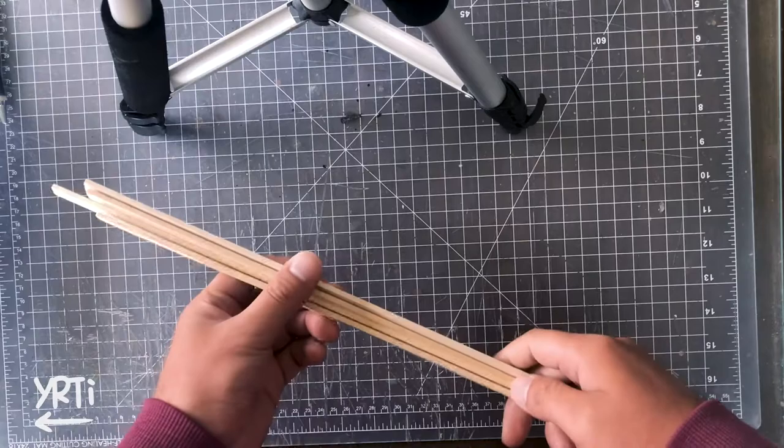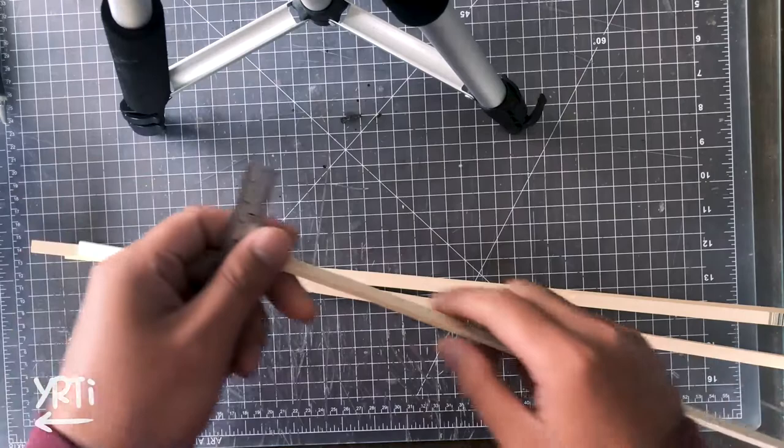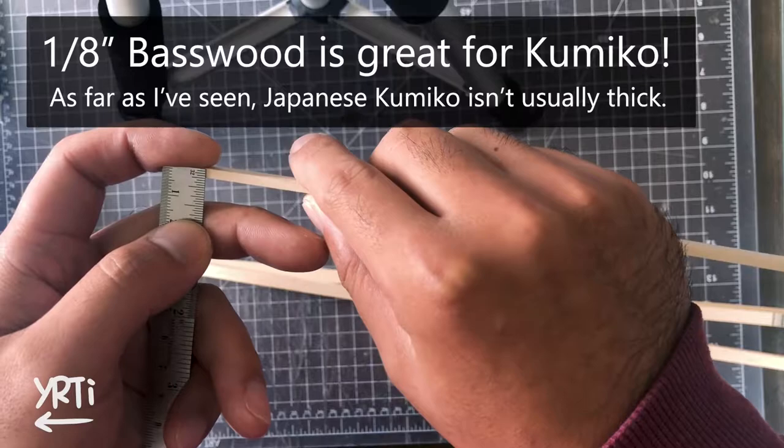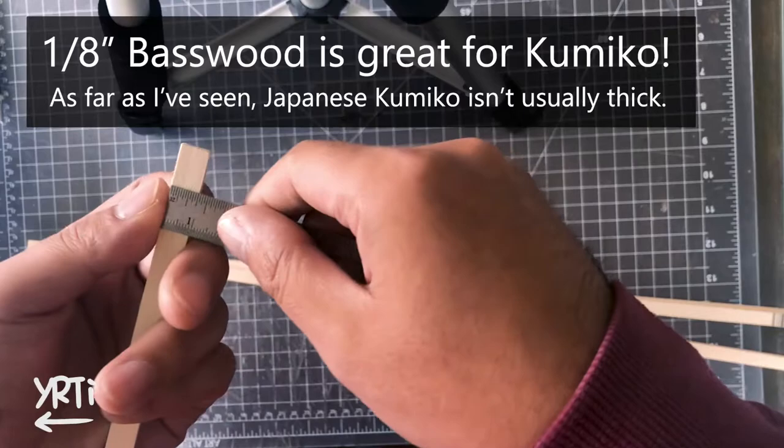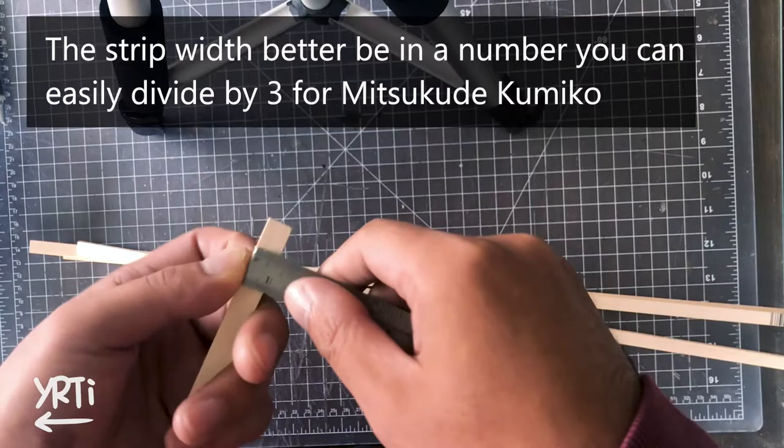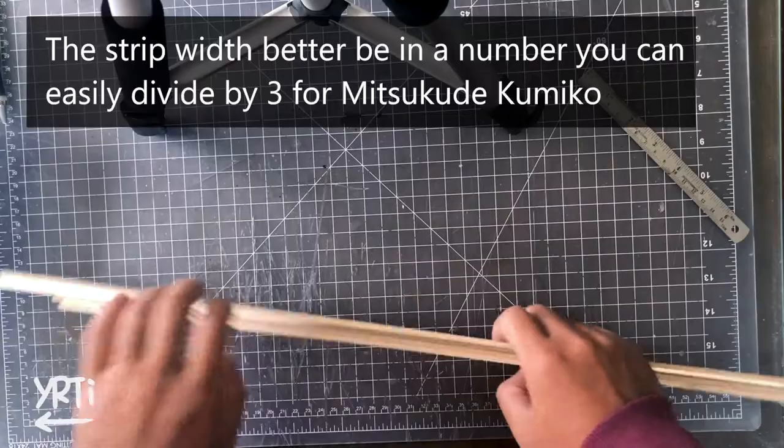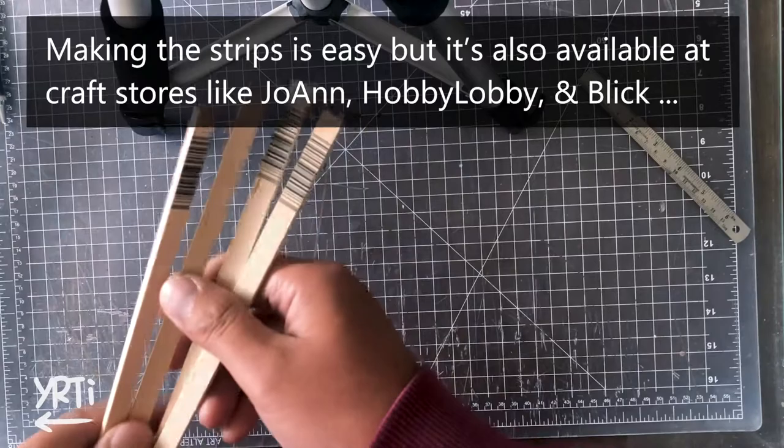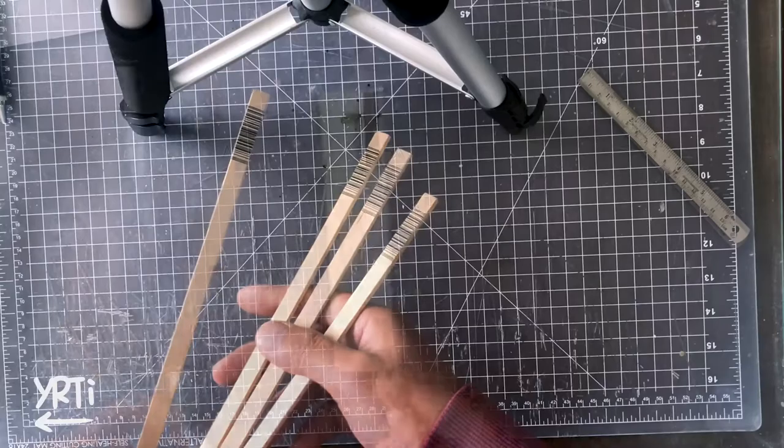Let me start my Mitsukude Kumiko tutorial. First, let me highlight the wood choice. I recommend you try bass wood or any soft wood for the first time and the thickness can be around 1.8. Don't underestimate it, it gets strong once it's assembled. And this time, I'll make Mitsukude so the strip is better be 3/8, 9/16 or 3.25, and I go with 3/8. These are the strips I got from a craft store, but I have a video how to easily cut these strips by hand tools in the description.